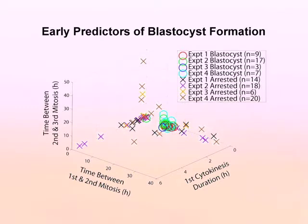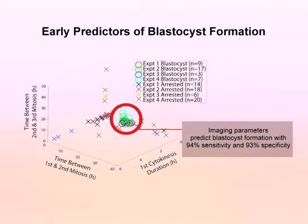Therefore, success in human development to the blastocyst stage could be predicted by the four-cell stage of development using three noninvasive imaging parameters with greater than 93% sensitivity and specificity.